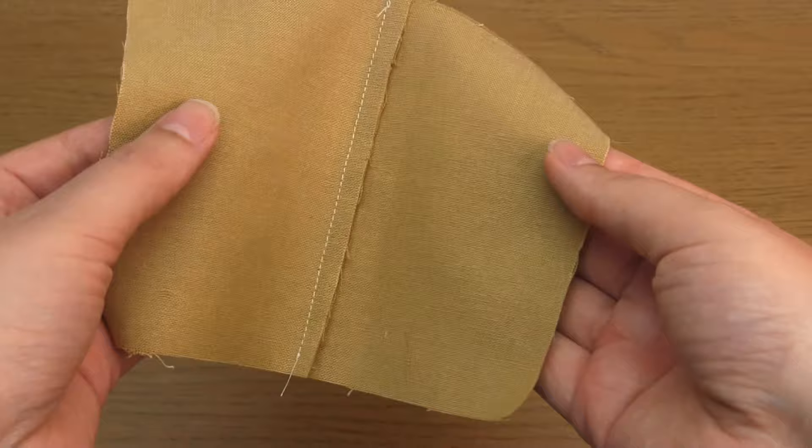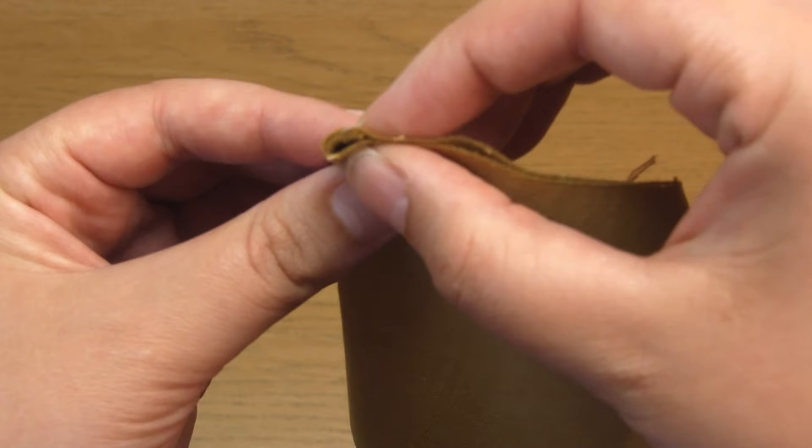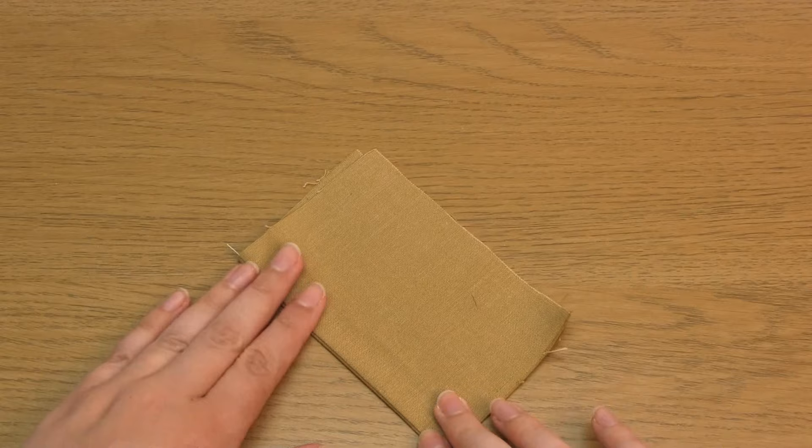Next fold the fabric pieces right sides together and press the seamed edge with your iron. As you can see, I now have nice crisp folds.